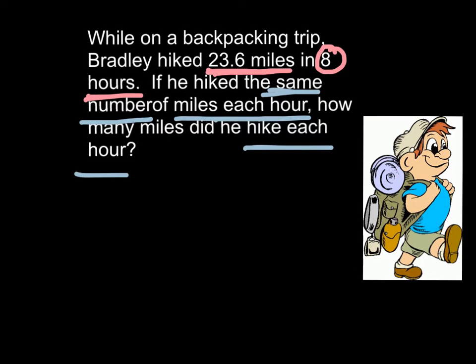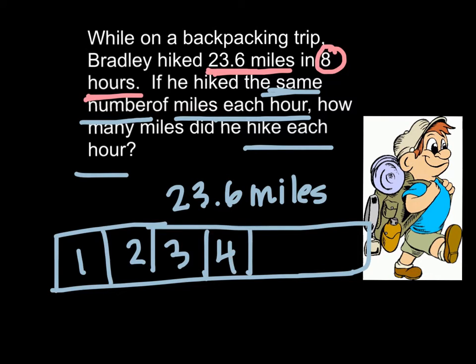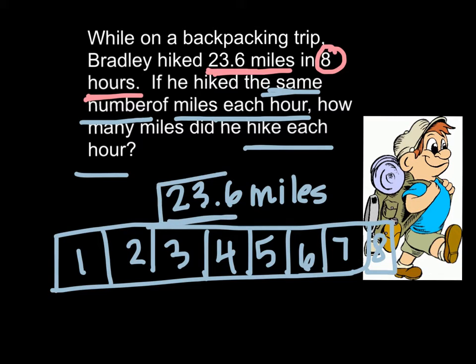The question is asking us how many miles did he hike each hour. So what that's telling me is I took 23 and six tenths of miles and I'm dividing that equally among eight hours. So I can use a model here to show that. I've got one, two, three, four, five, six, seven, and eight. So what I need to do here is I need to take 23.6 and divide that equally amongst each of these hours.